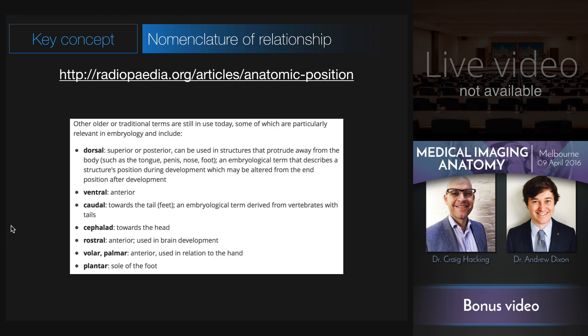There are a couple of special terms worth mentioning. Dorsal is a term with embryologic roots. It can refer to a structure that's superior or posterior, and is primarily used for structures such as the tongue, the penis, the nose, and the foot. Because of embryologic development and how structures change their position, sometimes it can be confusing that a dorsal structure is in fact anterior — such as the dorsum of the foot. Ventral is an old embryological term referring to the opposite of dorsal.